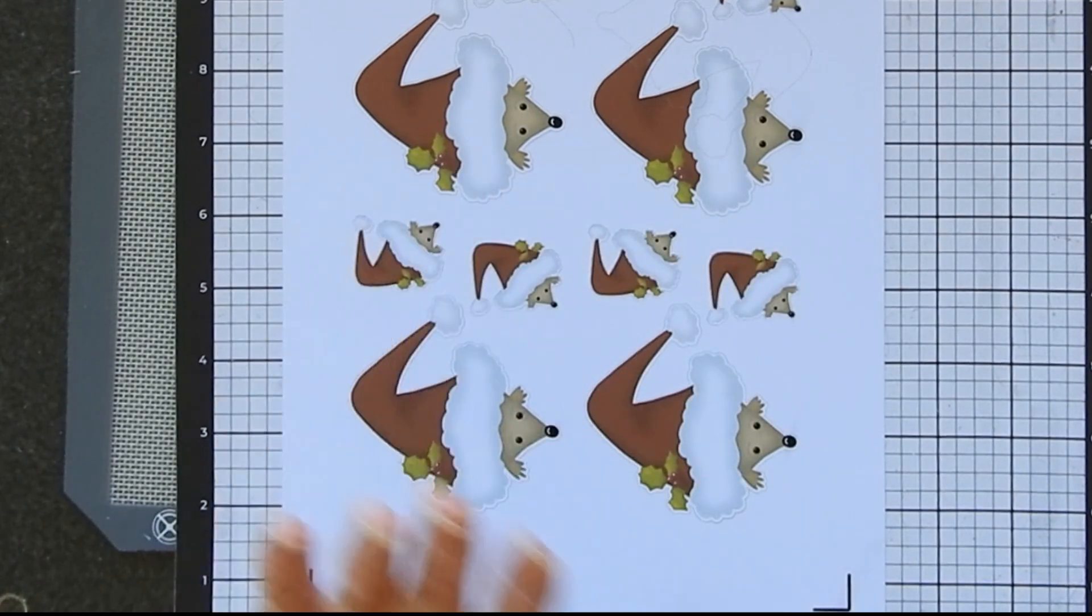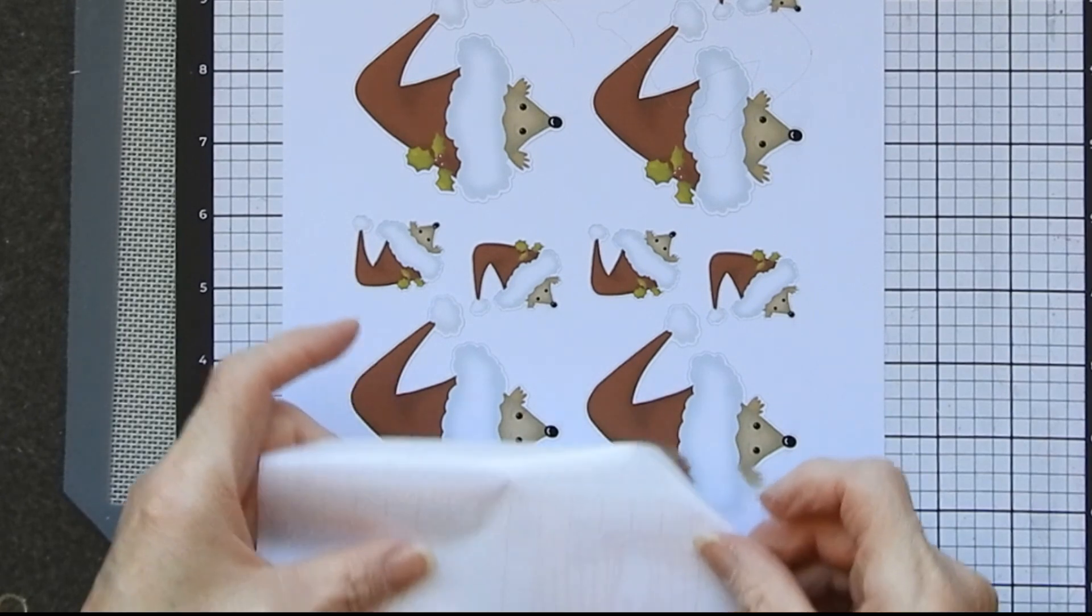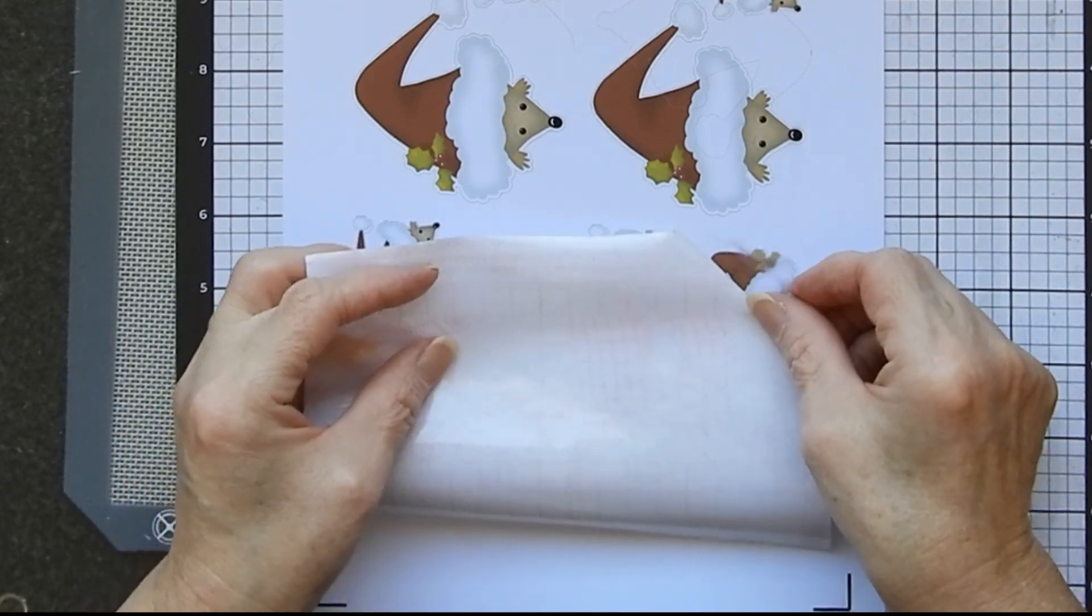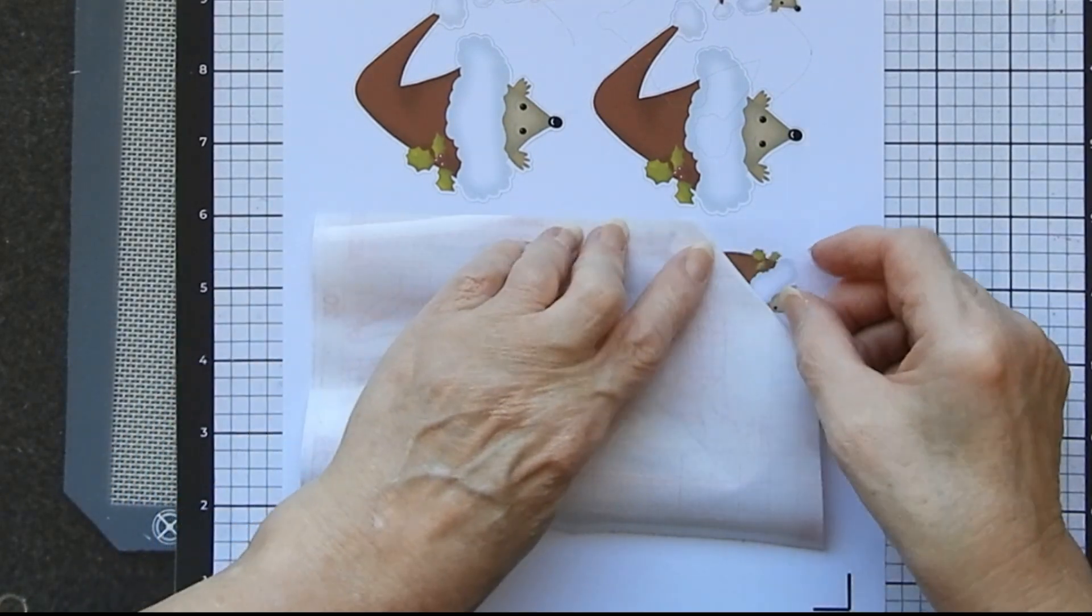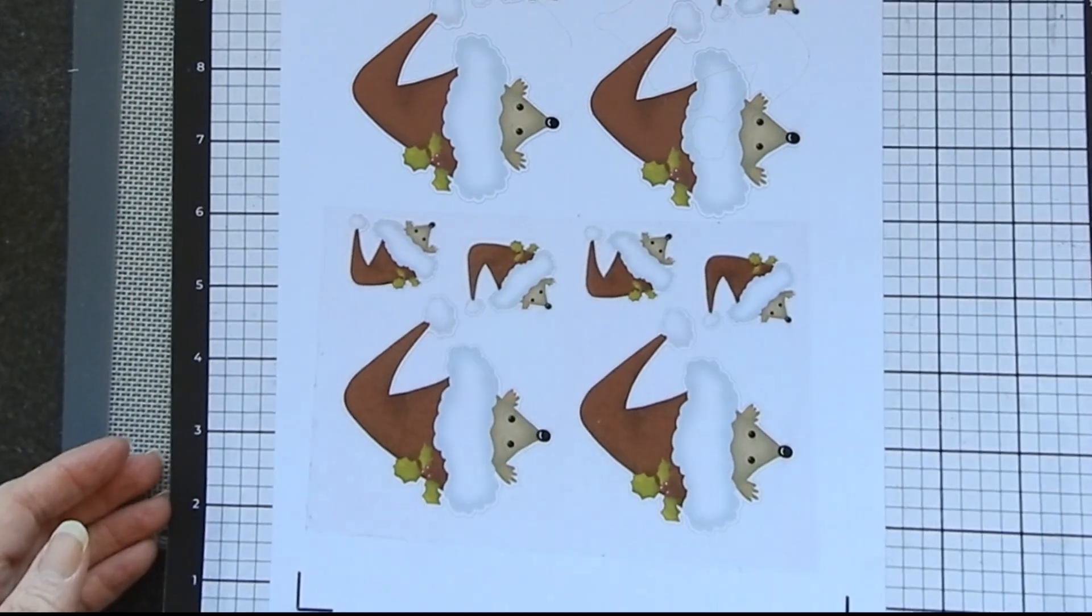What I'm going to do now, before I remove anything whatsoever, I'm going to apply a piece of book covering plastic over the top because I want some of these to be glossy. So I'm going to send this to my machine again.